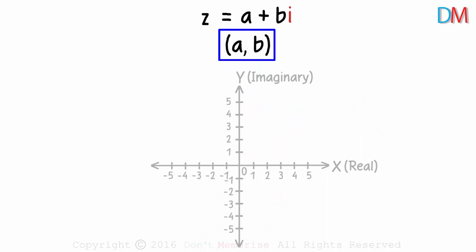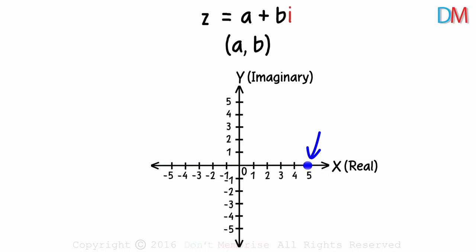Now what if the points lie on one of the axes of the Argand plane? Say the point is here on the x-axis. This number will have only the real part. It can be written as 5 plus 0i. And if the point is here on the x-axis, it will be negative 3 plus 0i.